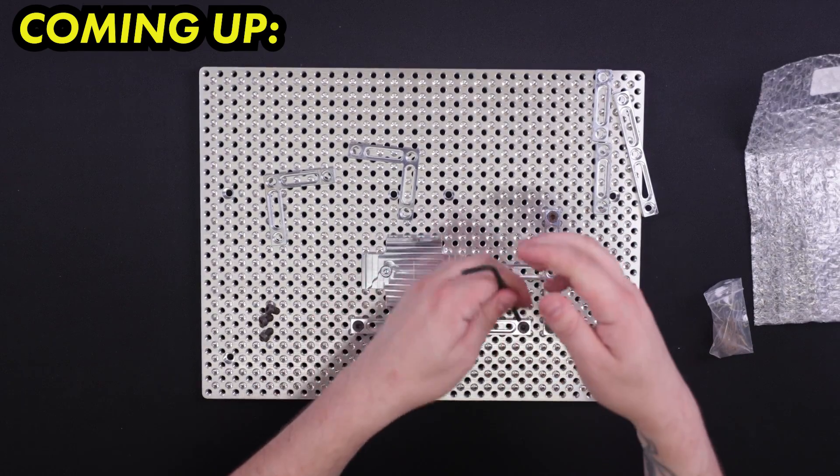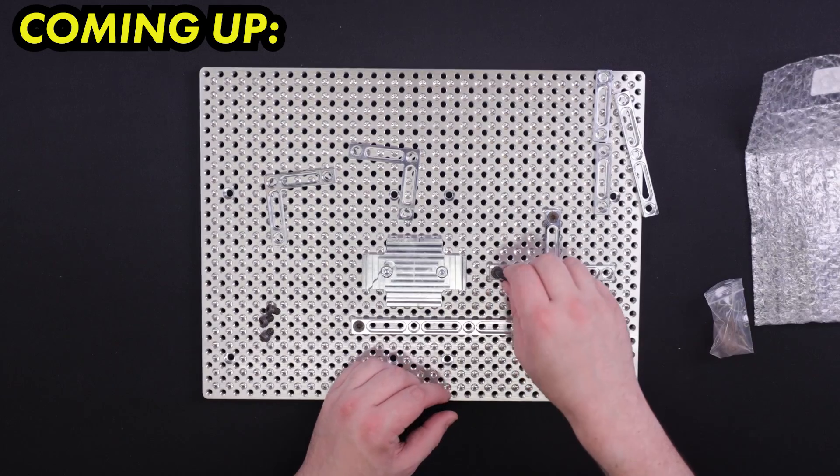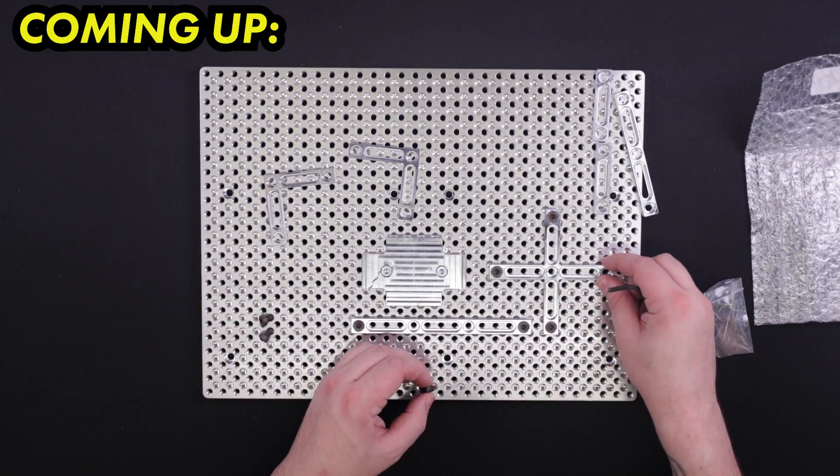You can hear the metal actually kind of scraping against the fixture of the screw and the fixture body because the tolerances are that tight.